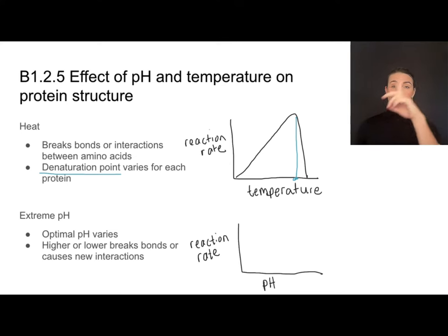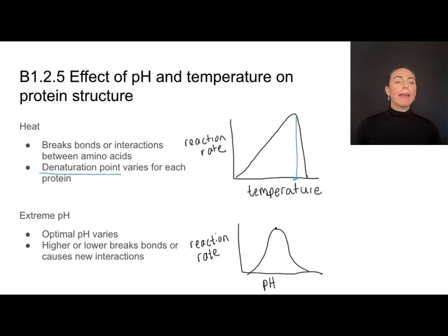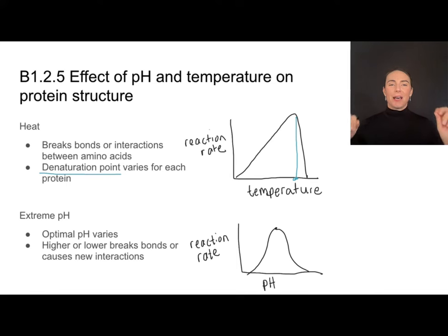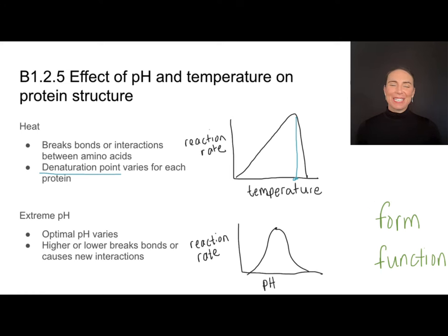Similarly, if I have a protein catalyzing a reaction, at its optimal pH it has a very high reaction rate and does its job really well. But when exposed to lower or higher pH ranges, the reaction rate decreases because the protein has been denatured. Every protein has an optimal pH — it's not the same for every protein, it might be 7, 2, or 10. Either higher or lower pH values causes interactions between amino acids or bonds to break or be disrupted, again unfolding that functional shape. When I change the form, the function also changes — a protein's function is very dependent on its form.